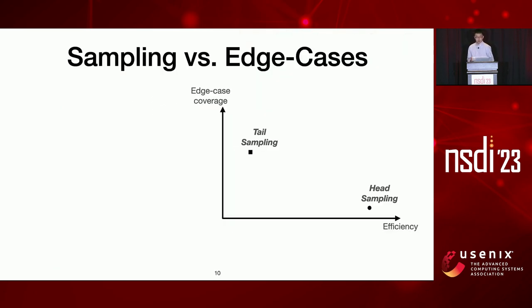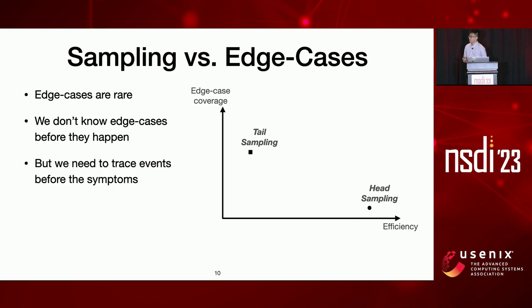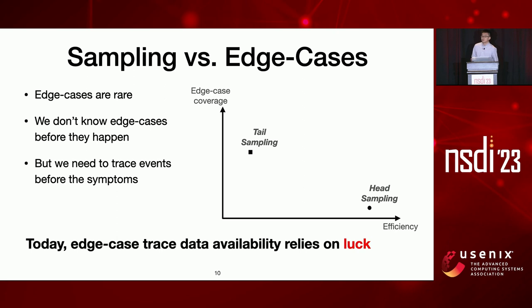Here is a fundamental problem when we want to look at edge cases. First, edge cases are by definition rare — they are infrequent requests. When a request comes in, we don't know if it will fall into an edge case before we actually see the symptoms. But to go back and examine a problematic request, we need the trace events from before we saw the symptoms. We argue that today's tracing systems would fail on edge cases, because trace data availability for an edge case request relies only on luck — you can only hope the request already fell into the very low sample pool when you see the problem.